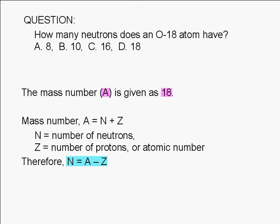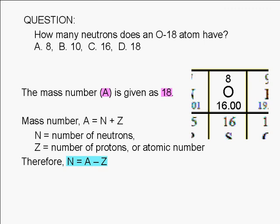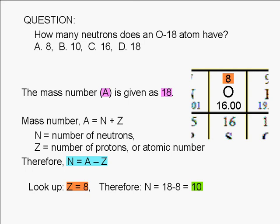A is 18. We can look up the atomic number for oxygen and find that it is equal to 8. Therefore, the number of neutrons is 10. 18 minus 8 equals 10. The correct answer is B.